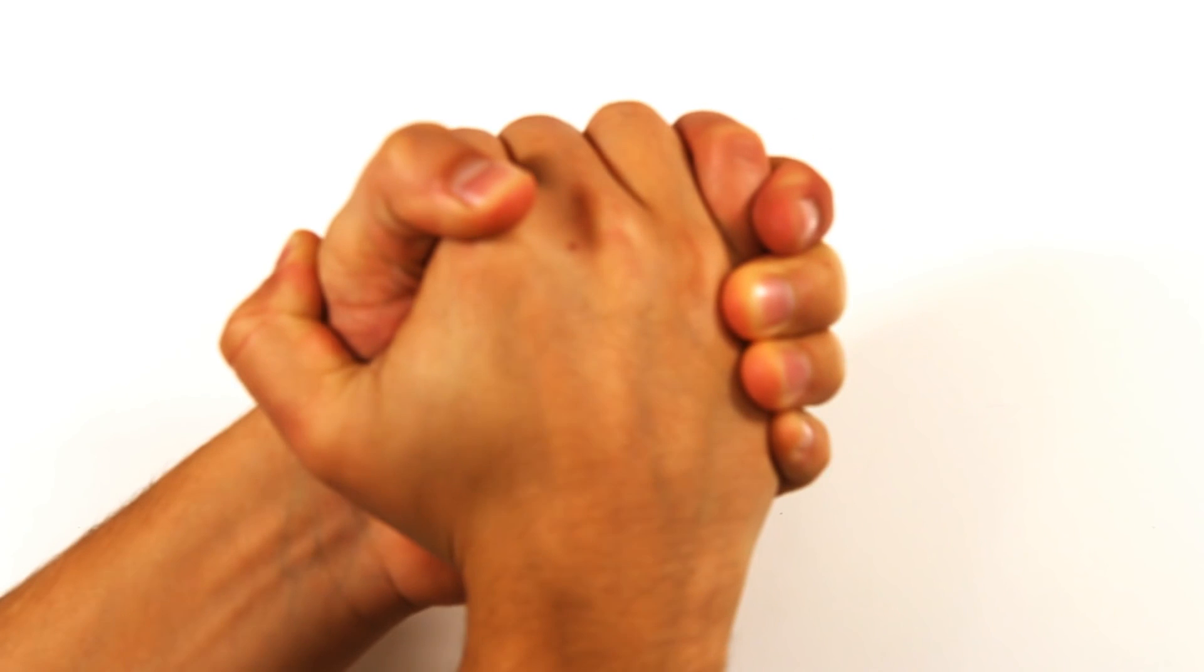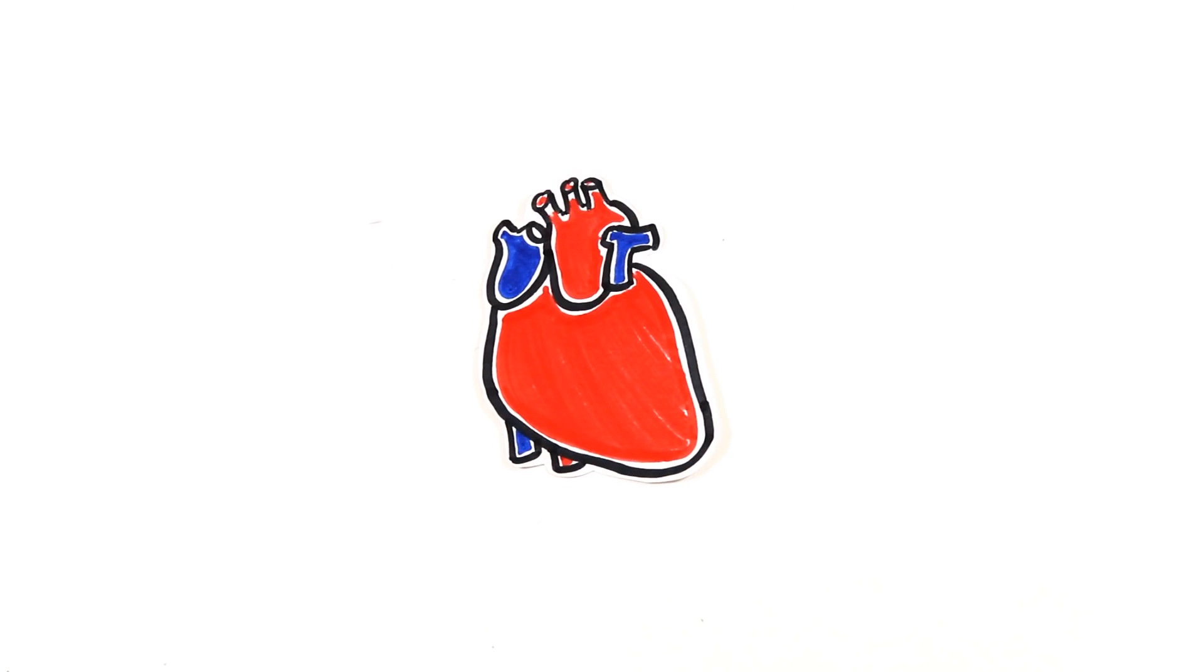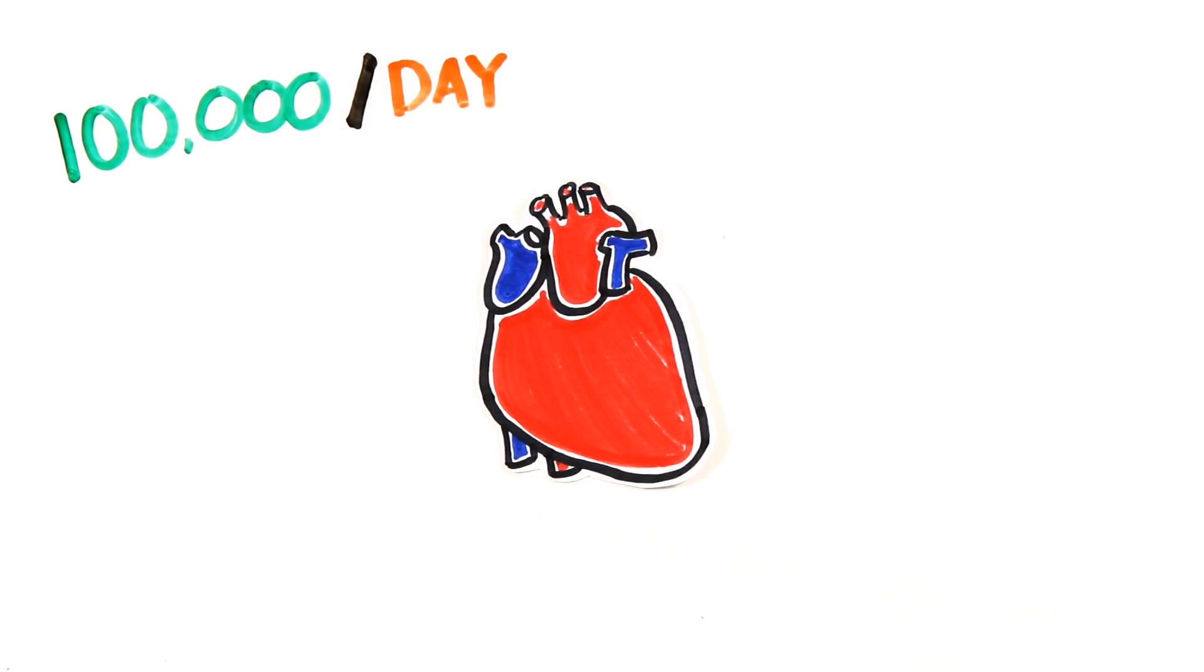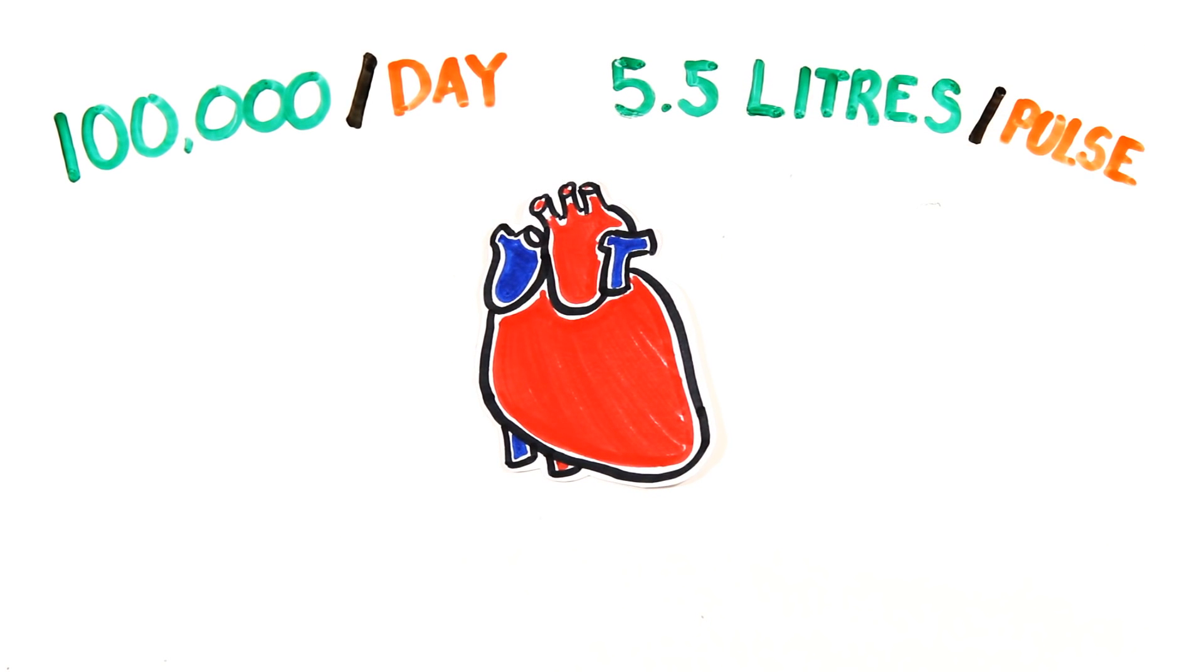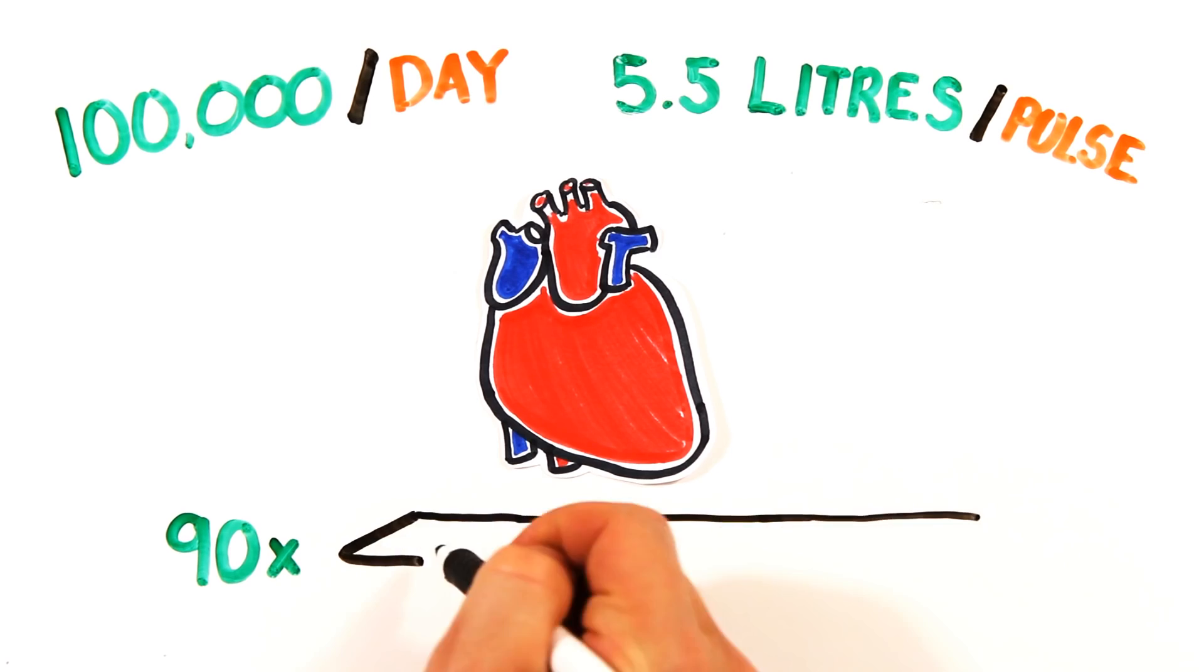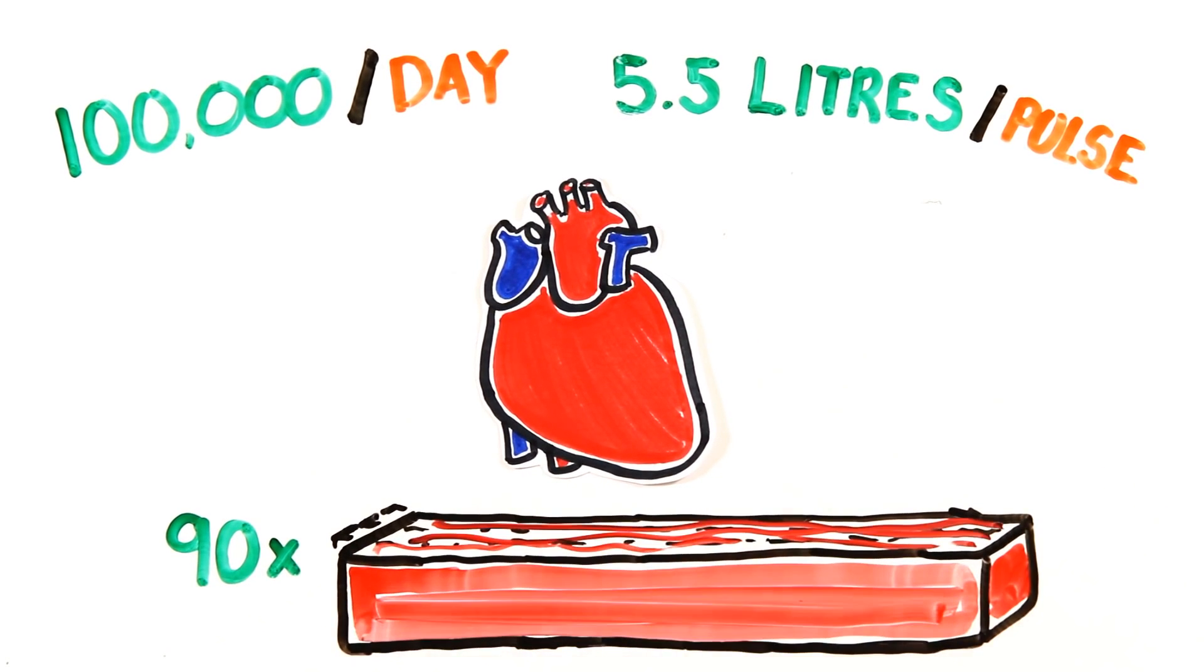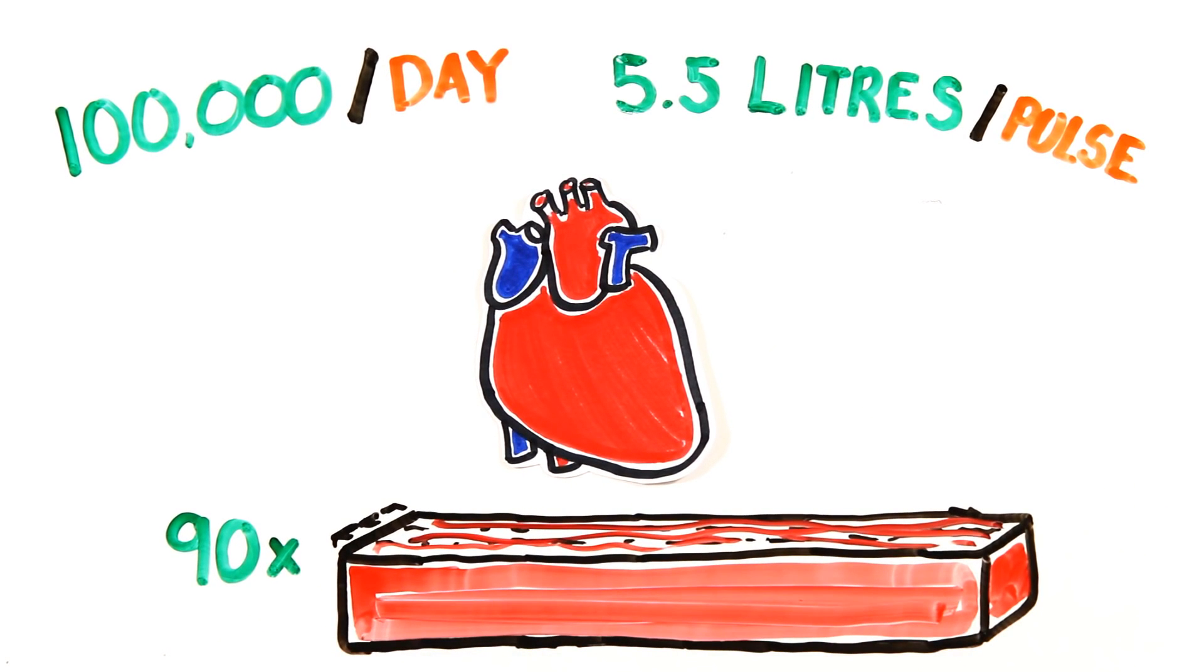Now clasp one hand into the other. That's roughly the size of your heart. It beats 100,000 times per day, pumping 5.5 liters with each pulse, which is close to 3 million liters of blood every year. If you lived to 75, it would fill 90 Olympic-sized swimming pools.